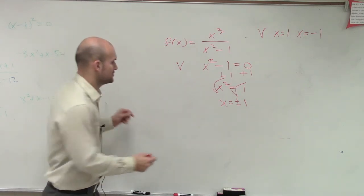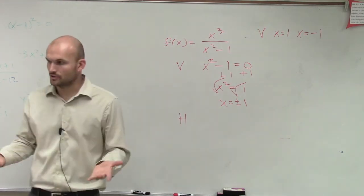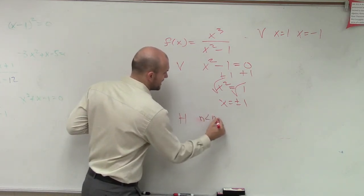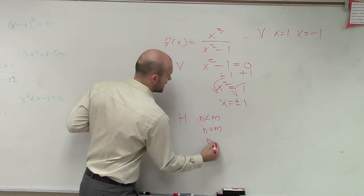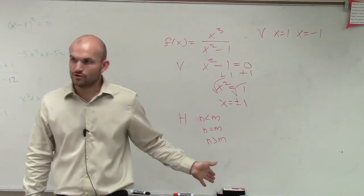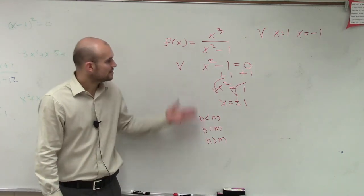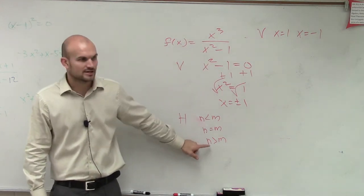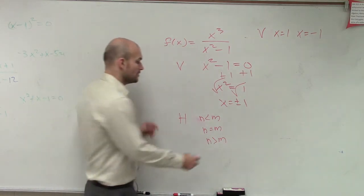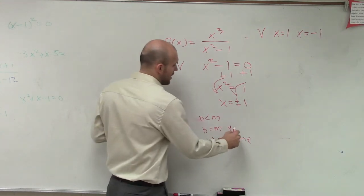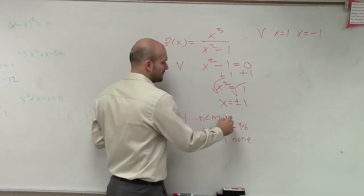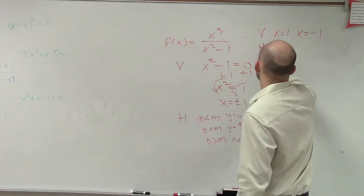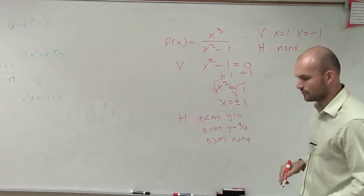The next thing we're going to look at is the horizontal asymptote. The horizontal asymptote uses the test in your notes: n is less than m, n equals m, or n is greater than m — where n is the degree of the numerator and m is the degree of the denominator. The numerator has the larger degree, so n is greater than m. When n is greater than m, you have no horizontal asymptote.